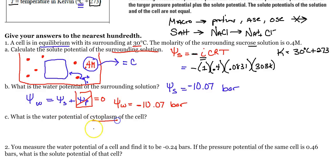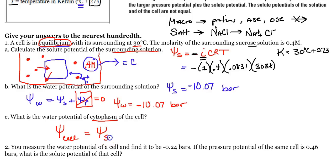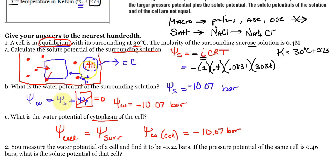What's the water potential of the cytoplasm? Since the cell is at equilibrium — the rate of water entering equals the rate leaving, meaning it's isotonic — there's no net flow of water. Therefore the water potential of the cell equals the water potential of the surrounding fluid: negative 10.07 bars. As long as you understand that solute potential is always negative, pressure in an open system is zero, and pure water has a potential of zero, this isn't too difficult.